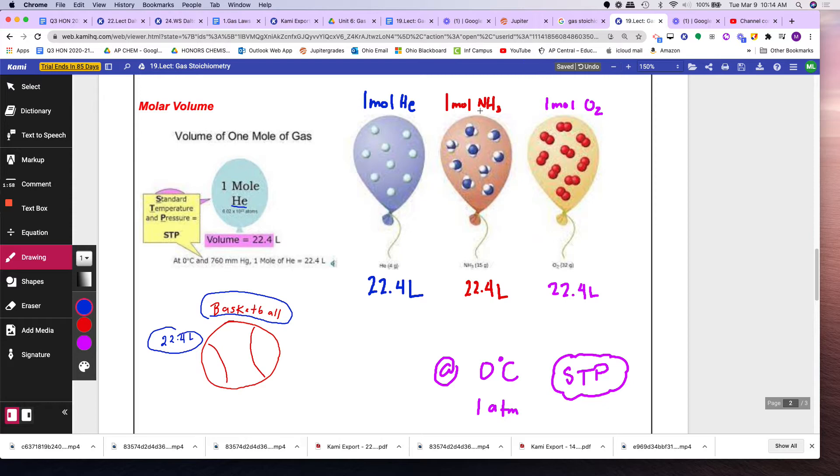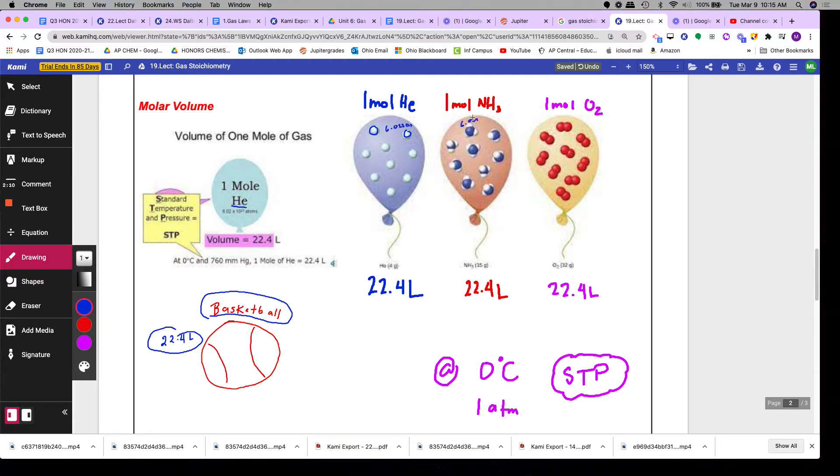Now if you have a mole of ammonia, which is NH3, this is the same number of particles, 6.022E23. Because you have the same number of particles, it will occupy the same volume, 22.4 liters.